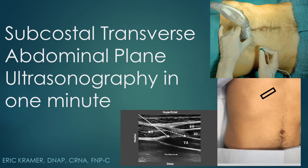The subcostal TAP varies from the midaxillary TAP because of the involvement of the rectus abdominis muscle. When you first put the probe on in this orientation, you will probably see the rectus abdominis muscle with the transverse abdominis muscle underneath it. The fascial plane in between those two is an acceptable location to deposit your local anesthetic.